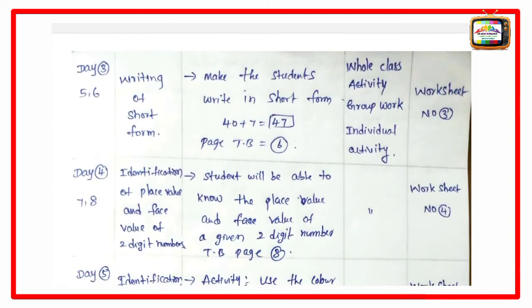Textbook page number 6. Next, Day 3, periods 5-6, writing of short form. Make the students write in short form: 40 plus 7 equal to 47. Textbook page number 6. This is the whole class activity, group work, worksheet number 3, individual activity.